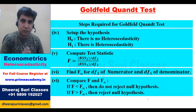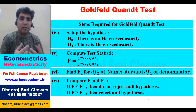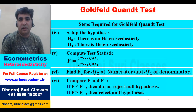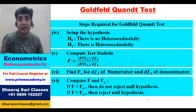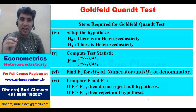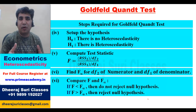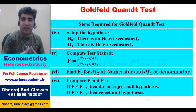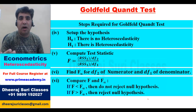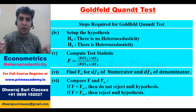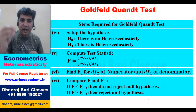In examinations, the question paper will give you the regression models along with RSS1 and RSS2 directly — you are not required to compute them, as that would involve very lengthy calculations. The purpose of the question is to check whether you know how to detect heteroscedasticity using the Goldfeld-Quandt test. So we just need to apply the given data to the required steps.